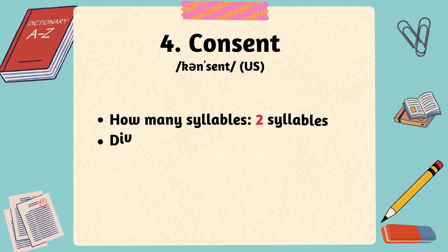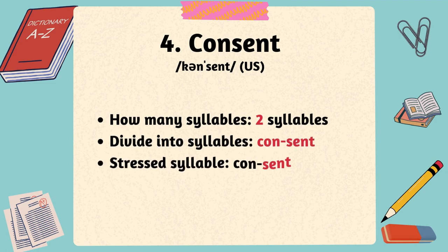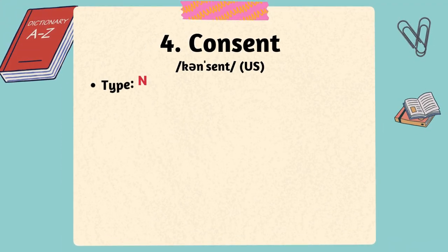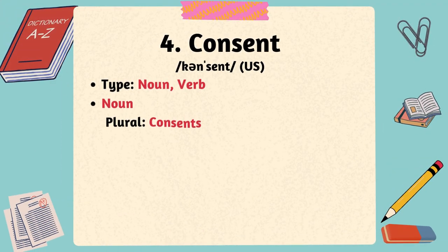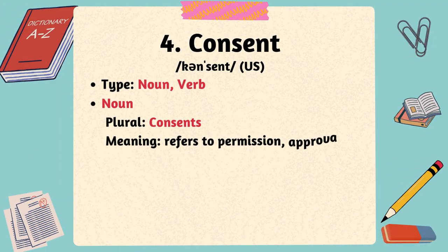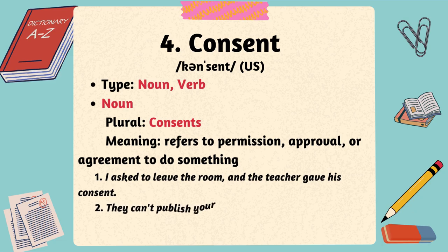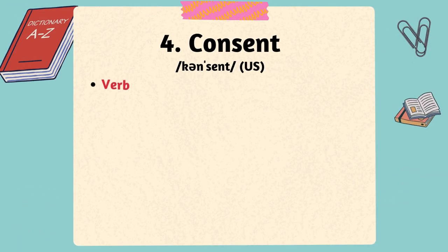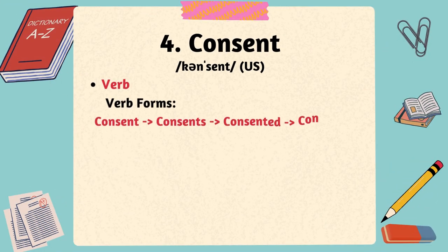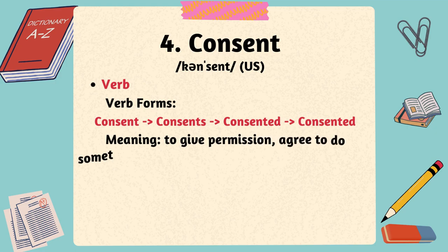The fourth word is consent. The word consent has two syllables, with the stress on the second syllable. Consent is a noun and a verb in English. When used as a noun, consent refers to permission, approval, or agreement to do something. For example: I asked to leave the room, and the teacher gave his consent. They can't publish your name without your consent. Consent as a verb means to give permission, agree to do something, or to allow someone to do something.